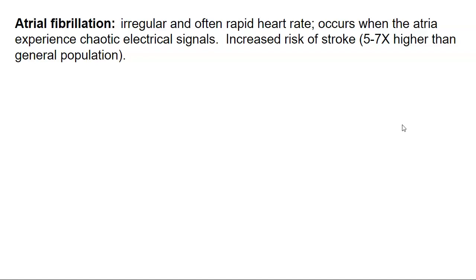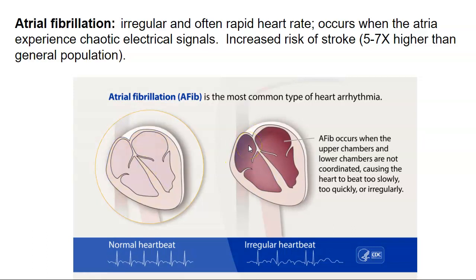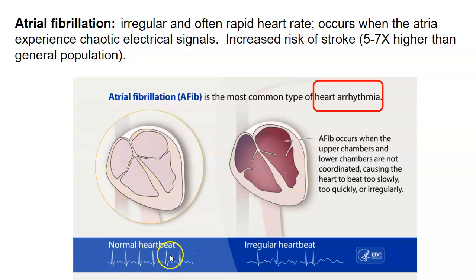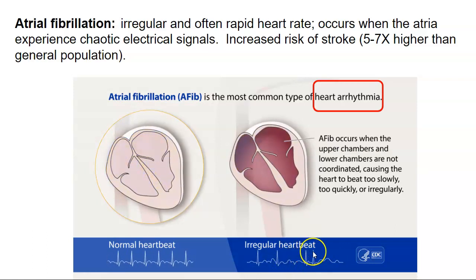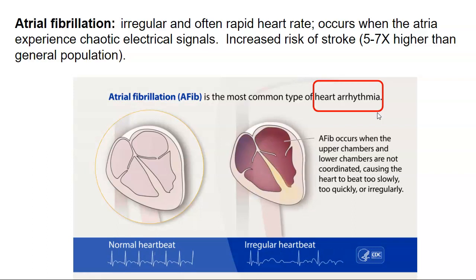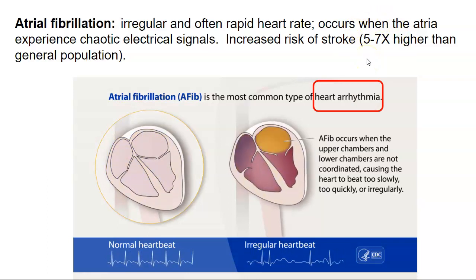Atrial fibrillation is an irregular and rapid heart rate when the atria experience chaotic electrical signals. This is normal EKG, and over here is the fibrillation — the back and forth erratic pattern. In the normal pattern we see the atria and ventricle clearly, but in fibrillation there's a lot of chaotic activity in the atria and irregular ventricular activity. There's really no P wave — just gibberish and lines. Also, the ventricular contractions are irregular. Atrial fibrillation is an example of a heart arrhythmia — an irregular EKG or irregular heart pattern — and it puts someone at five to seven times higher risk for stroke than the general population.